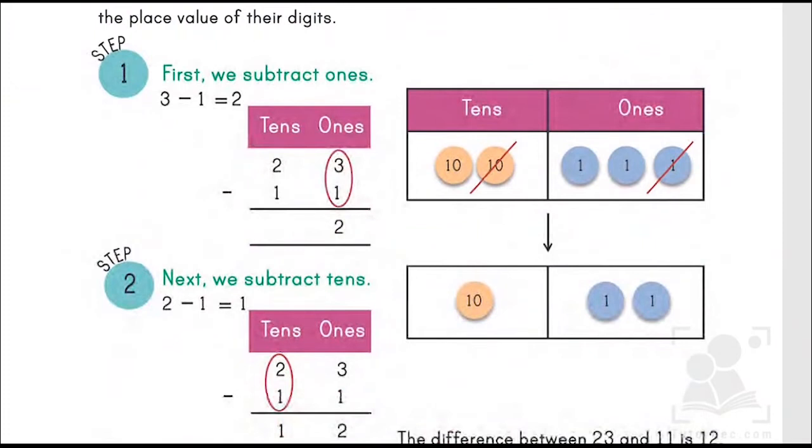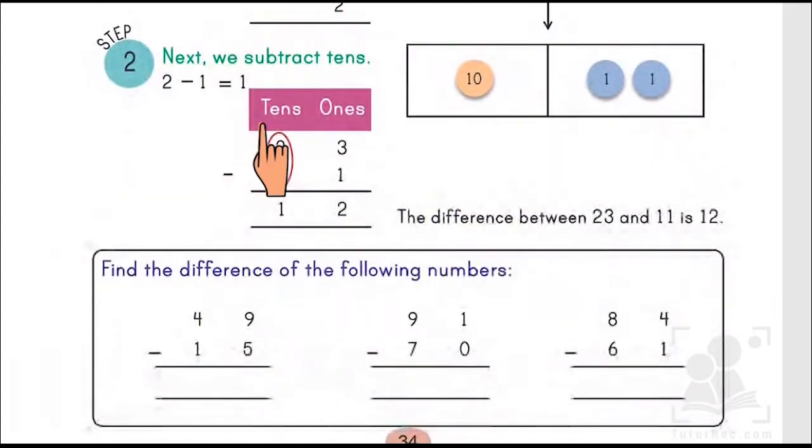We have some steps over here as well. First, we subtract ones. This is the mathematical basic formula that we have to subtract from one side, from the right-hand side. So as you can see, 3 minus 1 equals 2. Next, we subtract tens.